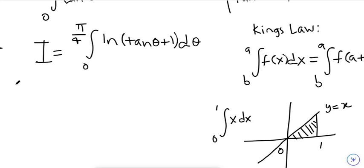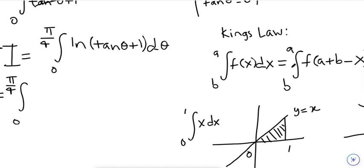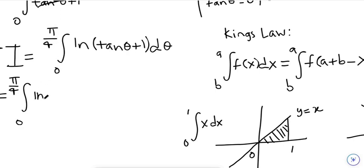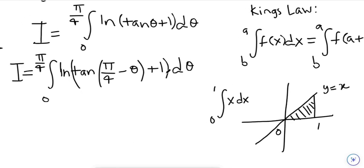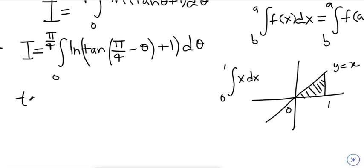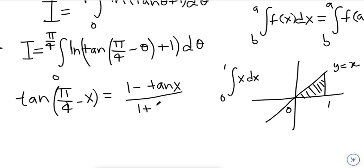Applying King's Law: I equals the integral from 0 to π/4, and we substitute (π/4 + 0 − θ), giving ln(tan(π/4 − θ) + 1) dθ. There's another trig identity here: tan(π/4 − x) = (1 − tan(x)) / (1 + tan(x)).